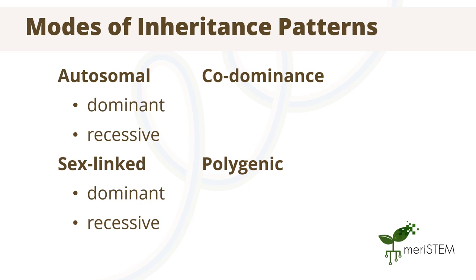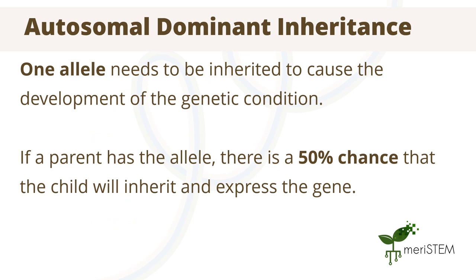Autosomal and sex-linked inheritance can also be further divided into dominant and recessive. Autosomal dominant inheritance is when the inheritance of a single allele causes the development of a genetic condition. This is because the trait is a dominant allele which is always expressed. If a parent has the allele, there is a 50% chance that the offspring will also inherit and express the gene. Since this inheritance pattern occurs due to genes on the autosomes, sons and daughters have an equal chance of inheriting the gene.